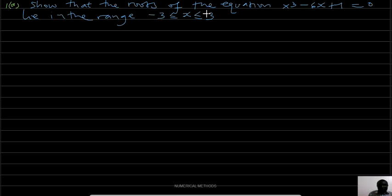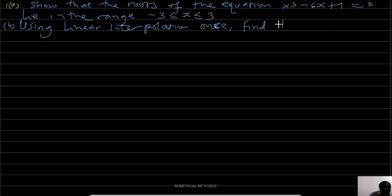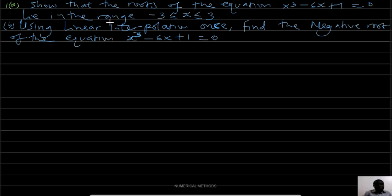Part B: Using linear interpolation once, find the negative root. To do this we need to draw a table. First we let f(x) = 0.